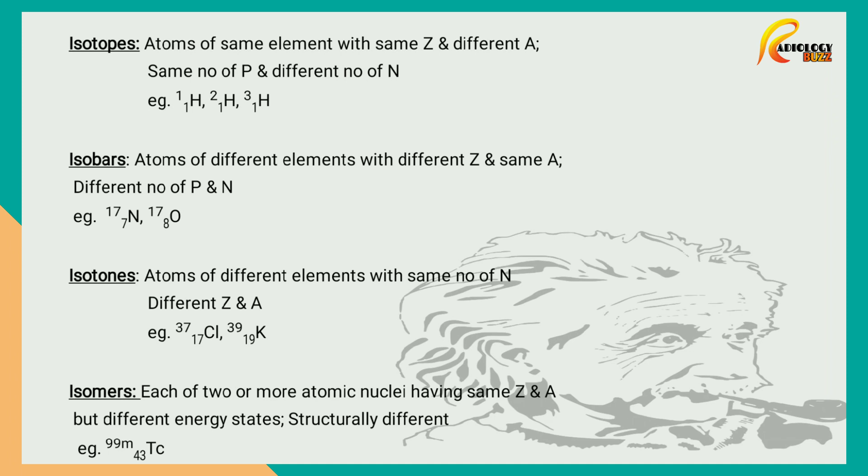Isomers. They are each of two or more atomic nuclei having the same atomic number and mass number but different energy states. The difference is their structure. They are the same element with different structures. Example: Technetium 99m.